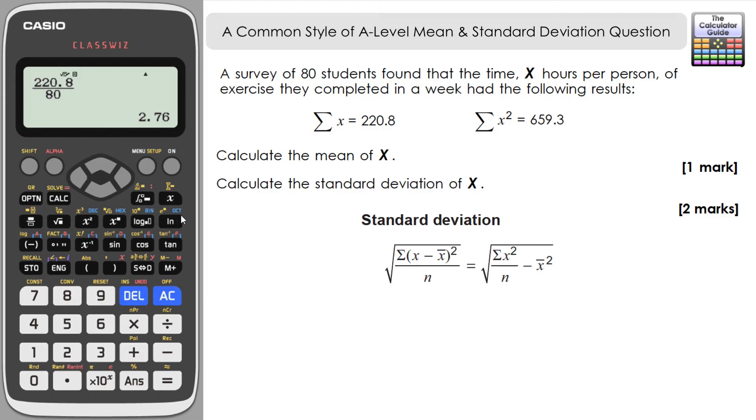So again we can just set this up in calculate mode on our calculator to be able to work that out. Let's start with a square root, and then I'm going to input the first fraction. The first fraction has got the sum of x squared on the top, so we know that's 659.3, and on the bottom it's got our number of values which is 80.